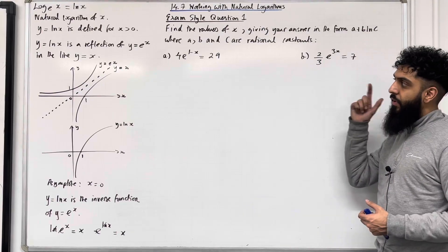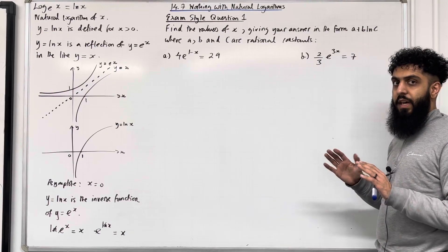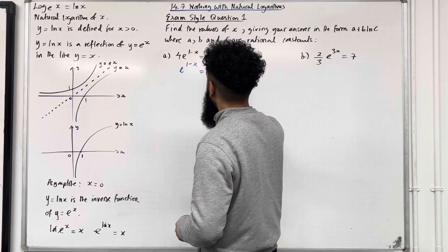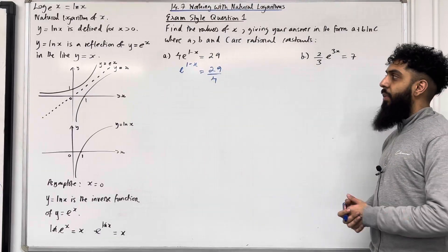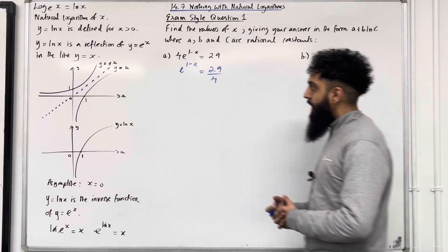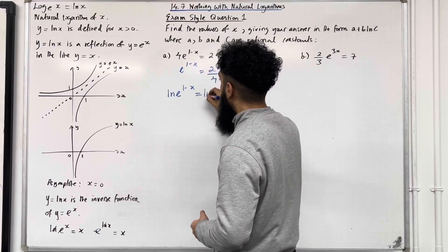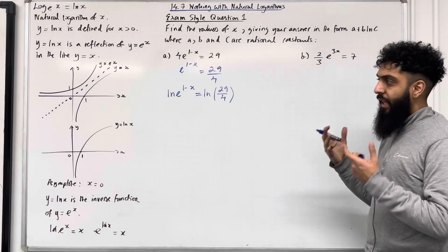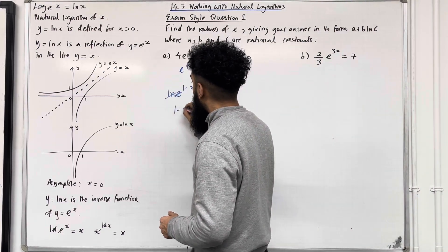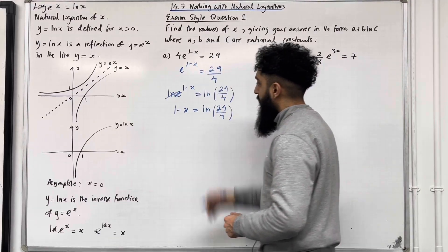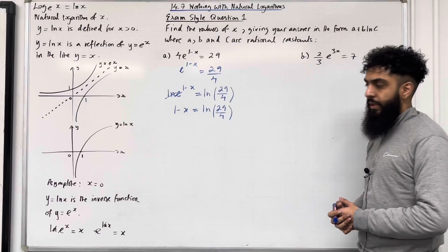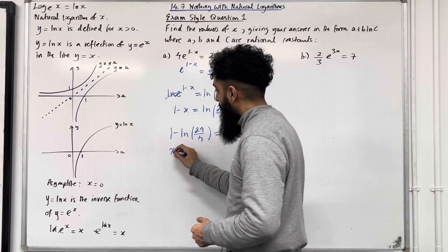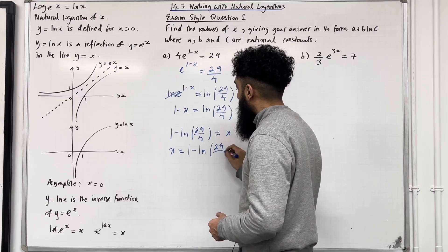The first step is to get rid of the 4 in front of the e. We divide both sides by 4, giving e^(1-x) = 29/4. Now, to get rid of the e, I apply natural logarithms on both sides: ln(e^(1-x)) = ln(29/4). The ln and e are inverses and cancel out, reducing the equation to 1 - x = ln(29/4). Rearranging, x = 1 - ln(29/4).